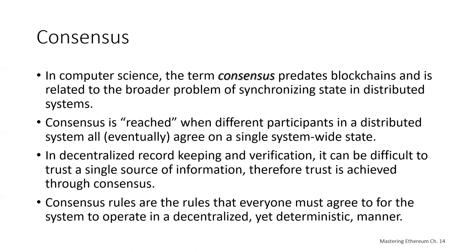Throughout the various Ethereum lectures, we've talked about consensus rules — the rules that everyone must agree to in order for the system to operate in a decentralized deterministic manner. In computer science, the term consensus actually predates the concept of blockchains, and it's related to the broader problem of synchronizing state in distributed systems, in order that different participants eventually agree on a single system-wide state. This is called reaching consensus.